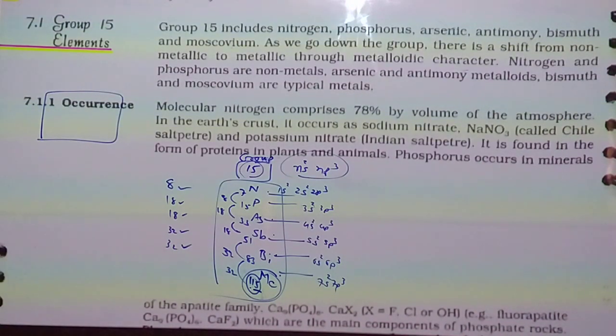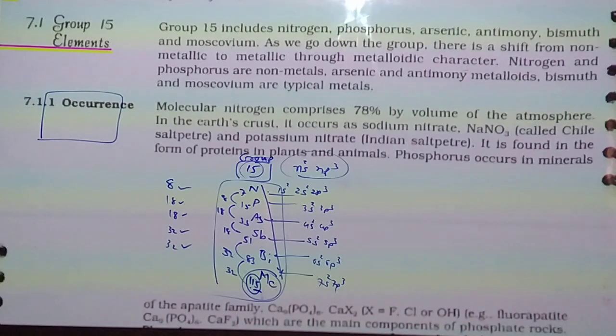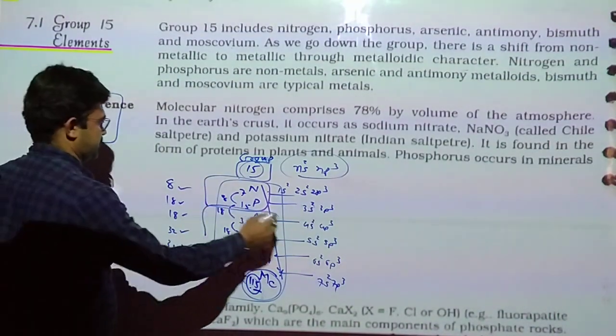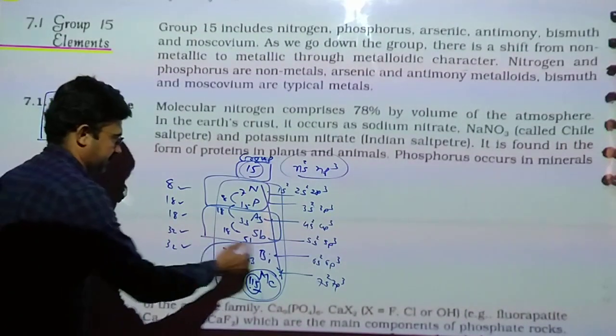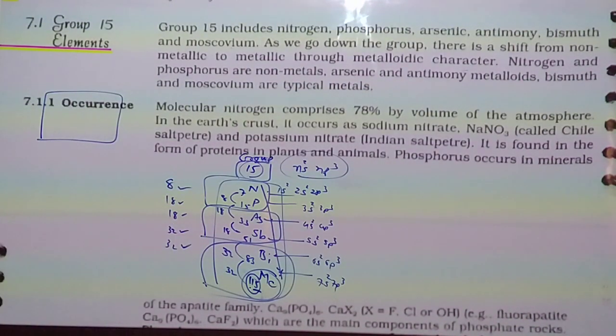Moscovium is the man-made artificial element which is not natural. Rest of Moscovium, all 5 are natural. As we go down the group, there is a shift from non-metallic to metallic through metalloidal character. Nitrogen and Phosphorus are non-metals. Arsenic and Antimony are metalloids, means semi-metal with dual nature. Bismuth and Moscovium both are metallic, typical metals.